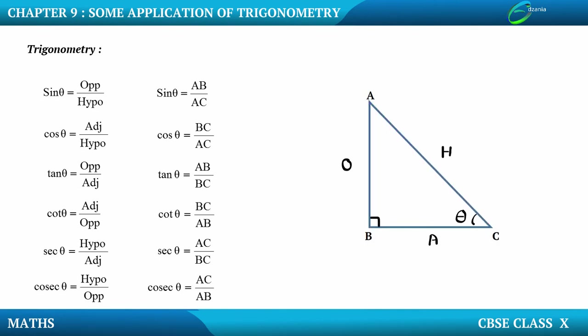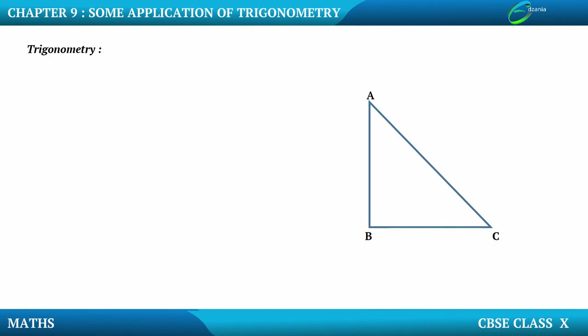So these are the 6 trigonometric ratios, and all of them are going to be useful for us in the application of Trigonometry. We will also use trigonometric ratios of specific angles. Let us quickly revise trigonometric ratios of specific angles.